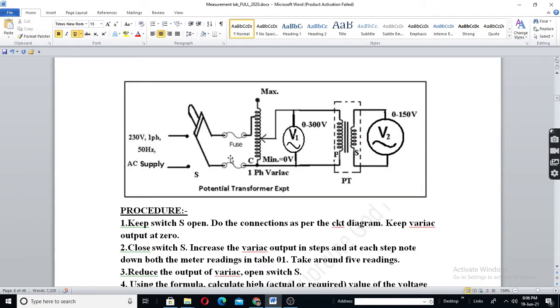So, a Potential Transformer is similar to a Normal Transformer. But it is always a Step Down Transformer. Primary will have higher number of turns. Secondary will have lesser number of turns.